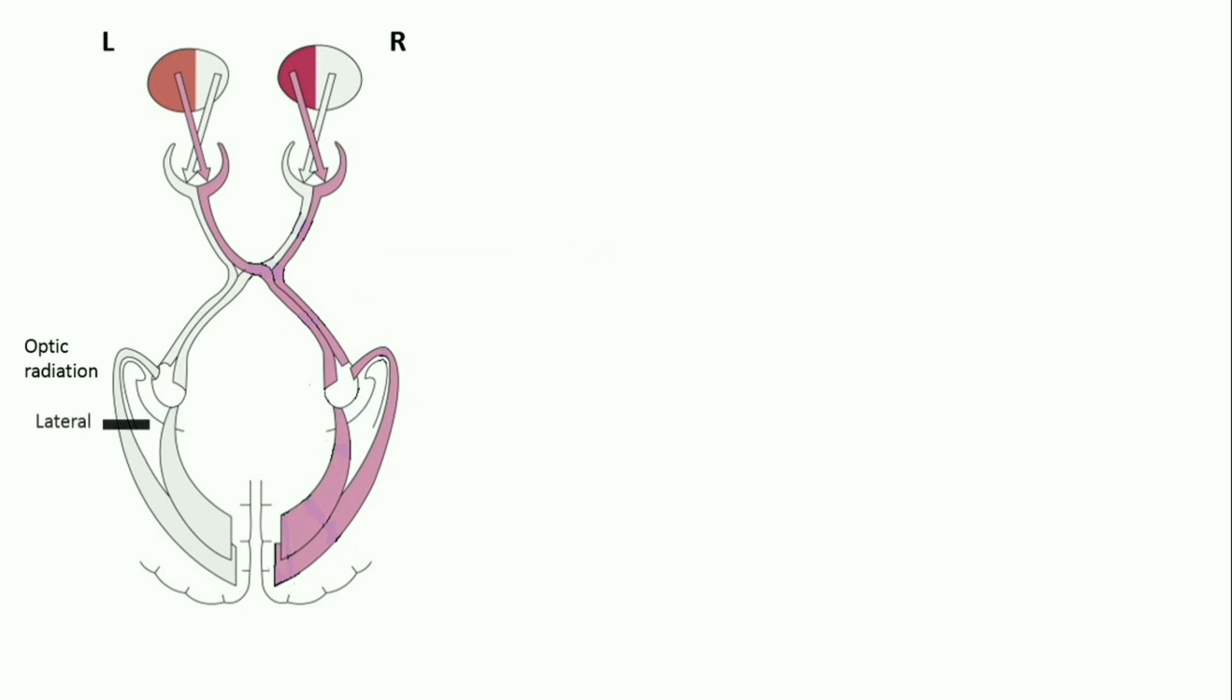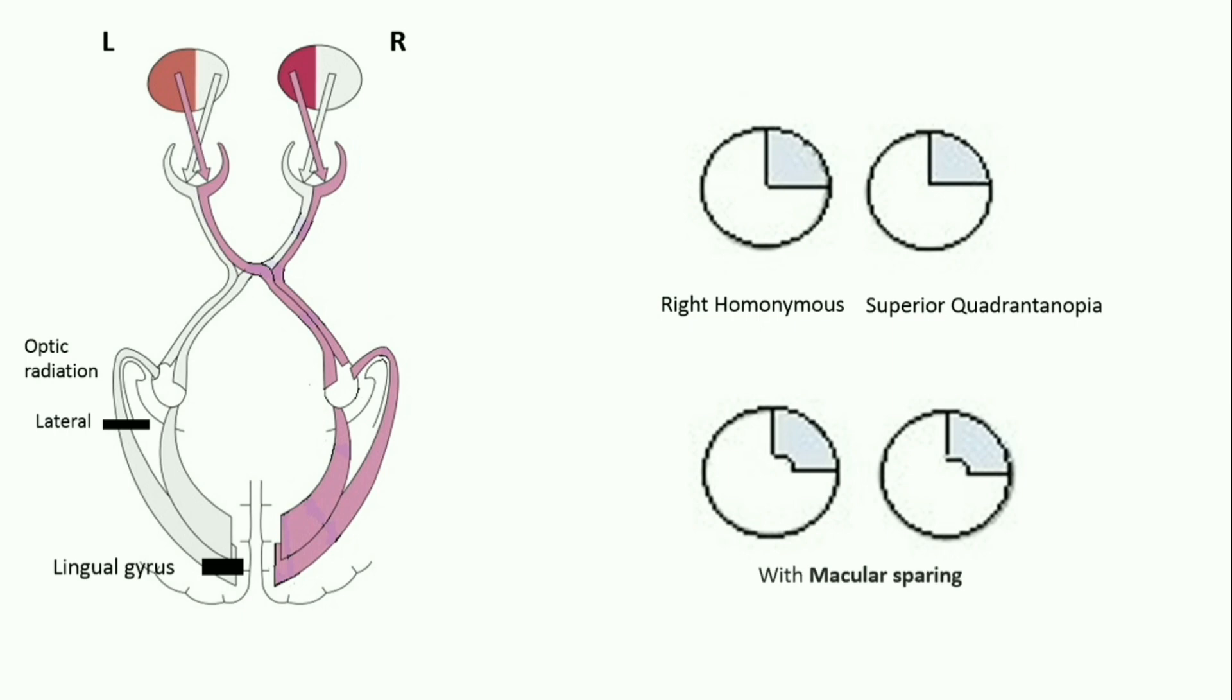Lesion to left lateral fibers presents with right homonymous superior quadrantanopia, because they represent lower retinal halves. Lesion to lingual gyrus also has same manifestation but with macular sparing.